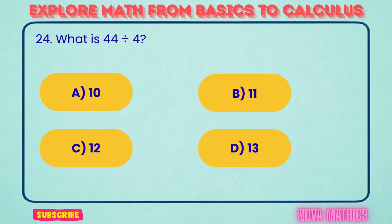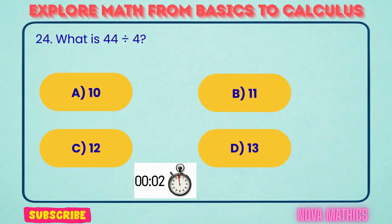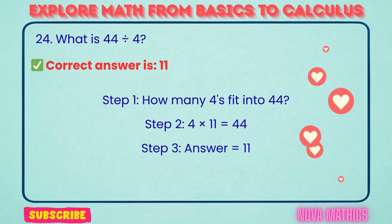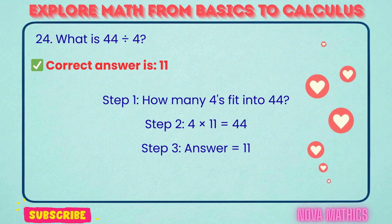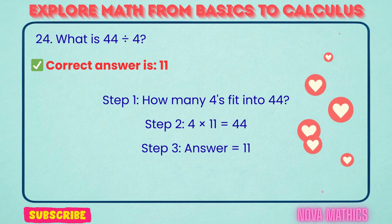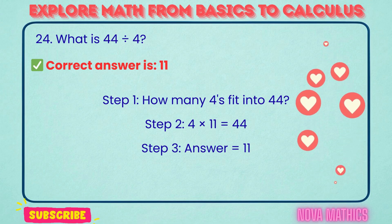24. What is 44 divided by 4? Correct answer is 11. 44 divided by 4 equals 11. We find this because 4 times 11 is 44.